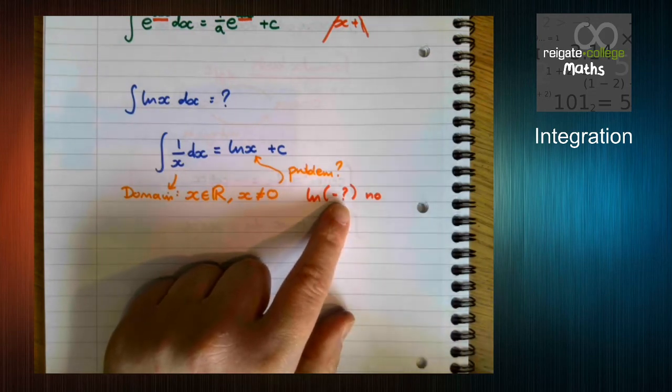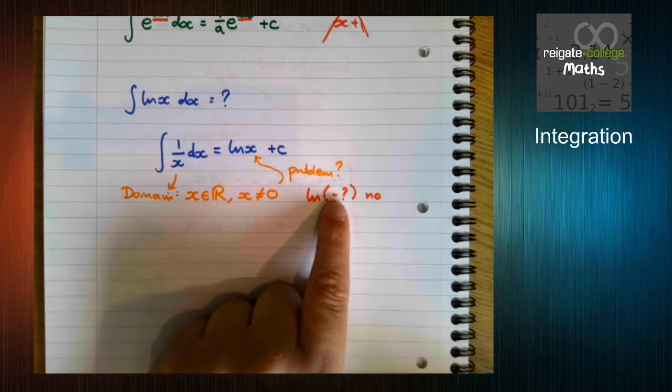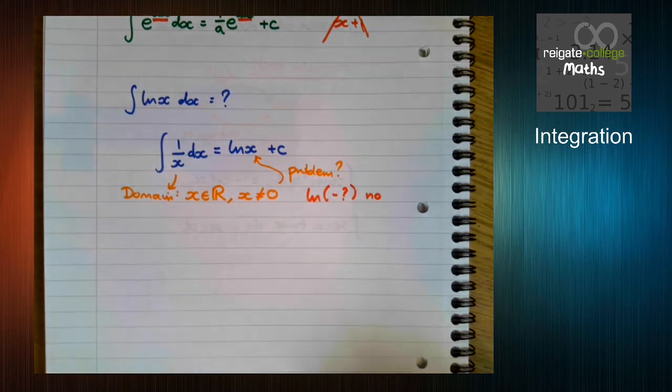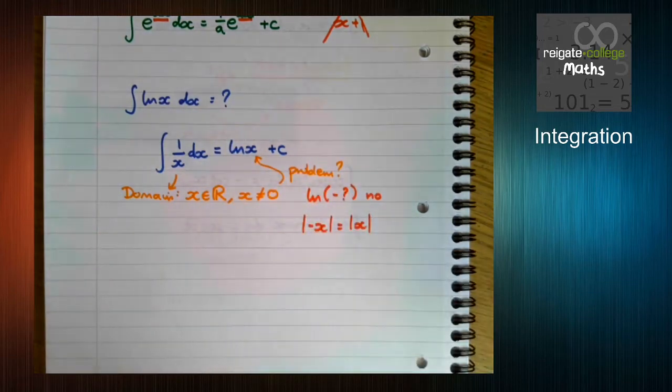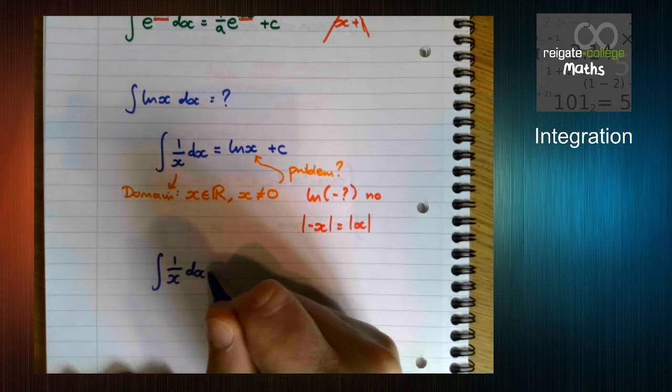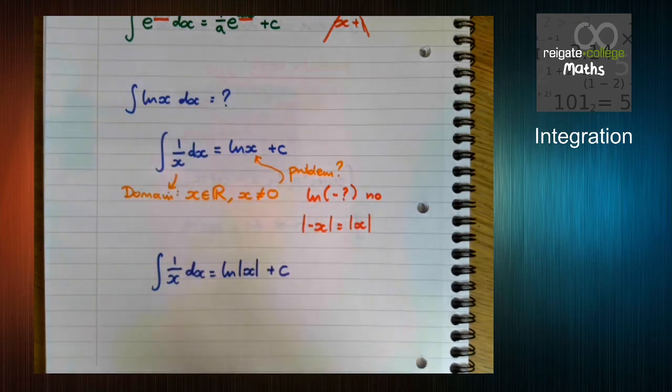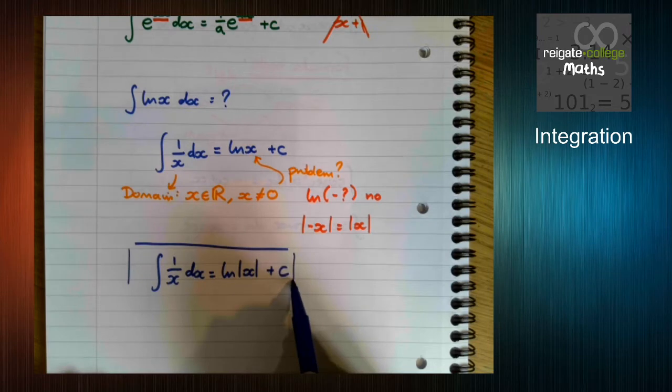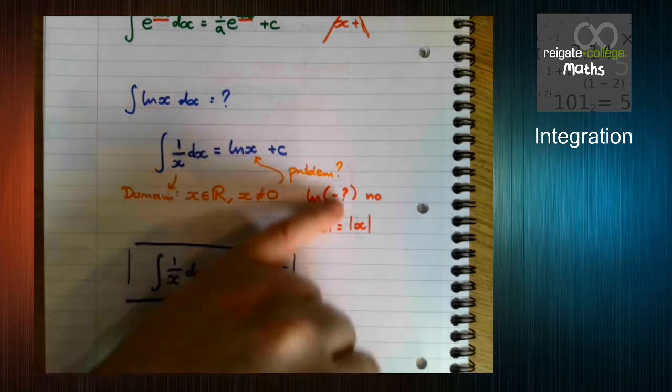It's this that we need to think about changing. The problem is the function. The problem is the fact that we can't do ln of a negative number. So how do we deal with that? How can we get rid of a negative? What function do we know that gets rid of a negative but keeps the x as it is? It's the modulus function.